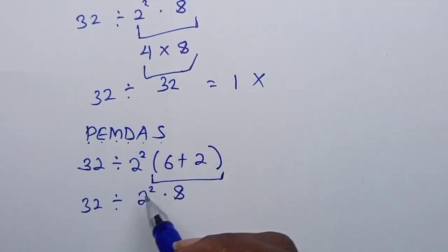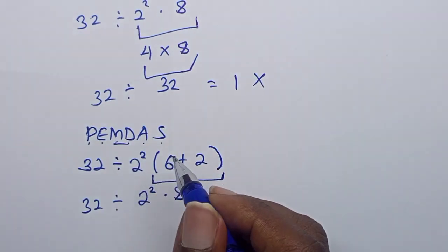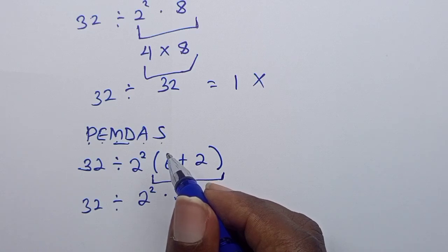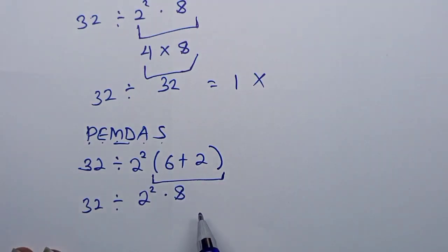According to PEMDAS, multiplication and division carry the same weight, but you have to work out whichever comes first from left to right. When you look from left to right, which appears first? Of course, you're seeing division. So that means you have to work out the division first. But before we work out this, we have to work out the exponents, which was this.